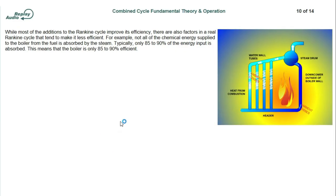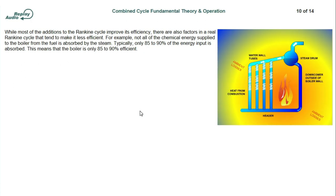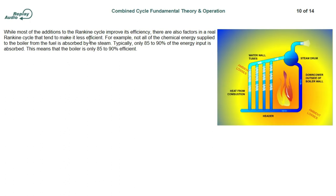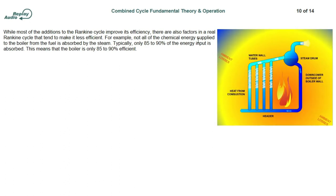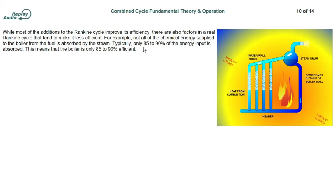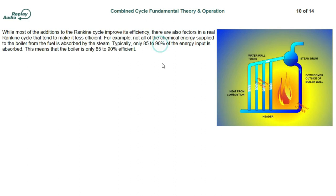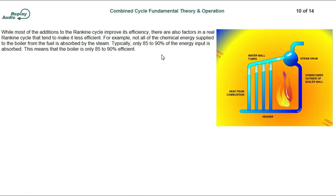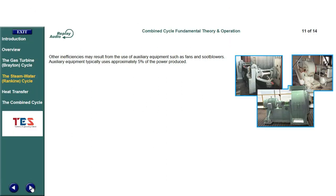Components such as feed water heaters and reheaters are added to improve cycle efficiency. While most additions to the Rankine cycle improve its efficiency, there are also factors in a real Rankine cycle that tend to make it less efficient. For example, not all of the chemical energy supplied to the boiler from the fuel is absorbed by the steam — typically only 85-90% of the energy input is absorbed, meaning the boiler is only 85-90% efficient. Other inefficiencies may result from auxiliary equipment such as fans and soot blowers, which typically uses approximately 5% of the power produced.